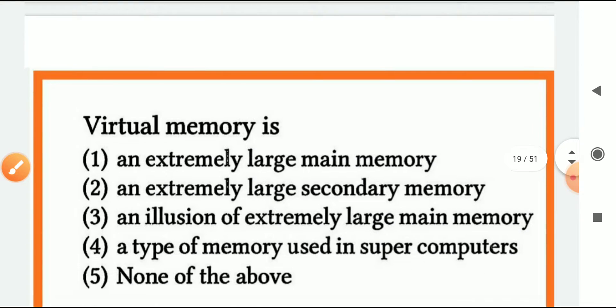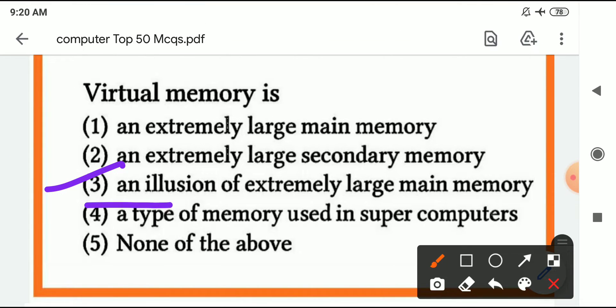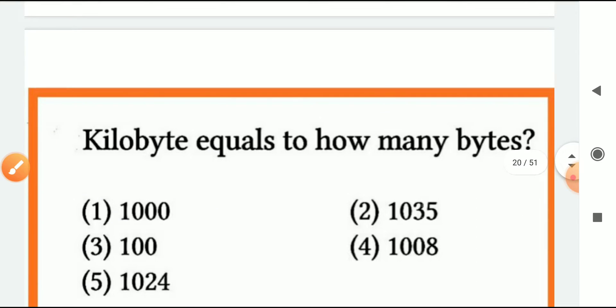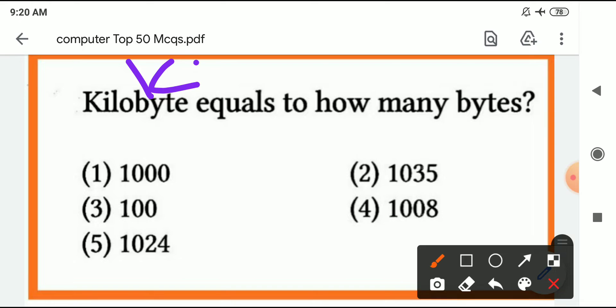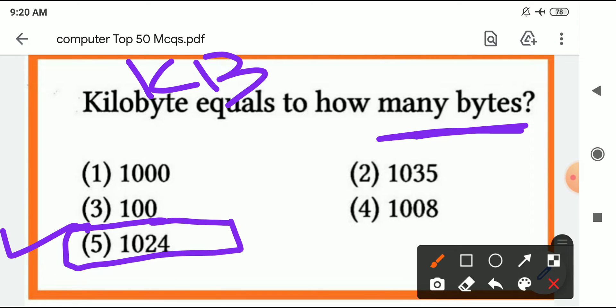Virtual memory is an illusion of extremely large main memory. Kilobyte KB - kilobyte means KB is equal to how many bytes? One KB is equal to 1024 bytes.